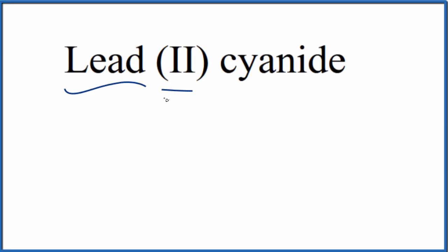To write the formula for lead(II) cyanide, first let's write the element symbol for lead, that's Pb.